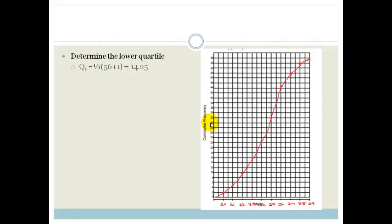So determine the lower quartile. We know that we've got 56 people that wrote this test. So to find the lower quartile, we've got 56 plus one divided by 4. That's the easiest way to find your lower quartile, which is going to be 14.25. That means the lower quartile lies between the 14th and 15th learner's mark. So I'm going to drop it down and you'll see it's approximately 23.